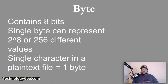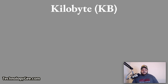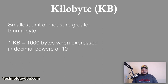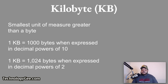A kilobyte, abbreviated with the letter K or KB, is the smallest unit of measure greater than the byte. It precedes the megabyte which contains 1 million bytes. The kilobyte is 1,000 bytes when expressed in decimal powers of 10, and 1,024 bytes when expressed in decimal powers of 2.